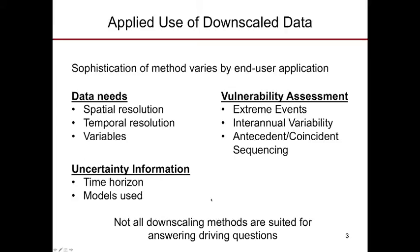We can also think about uncertainty information regarding the number of models one might want to use, and the time horizon one might be interested in for a climate change adaptation question. As we start thinking about vulnerability, which is at the core of many climate change adaptation issues, we can consider the types of events of interest — in many cases, extreme events such as extreme precipitation events or extreme fire danger type events.